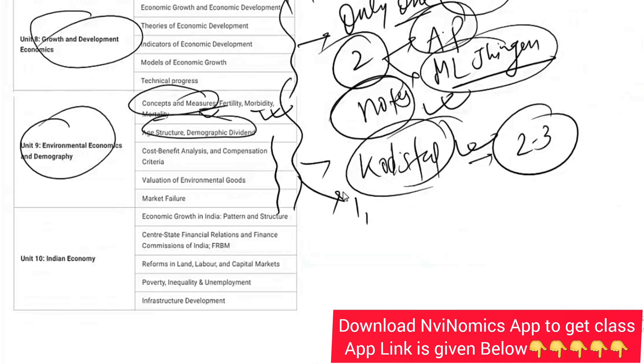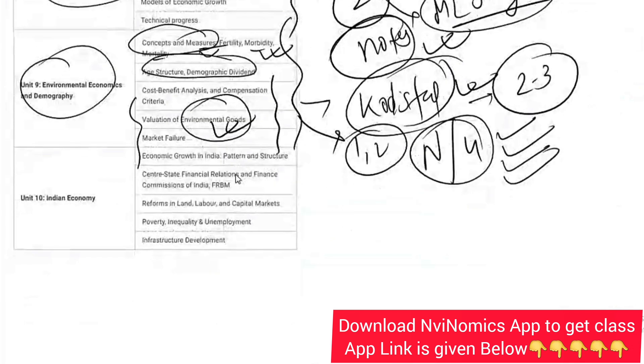Hardly it will take one to two entire lectures. Environmental goods, use value, non-use value, option value, contingent valuation method, stated preference, revealed preference - so many things are there. We will be covering that.